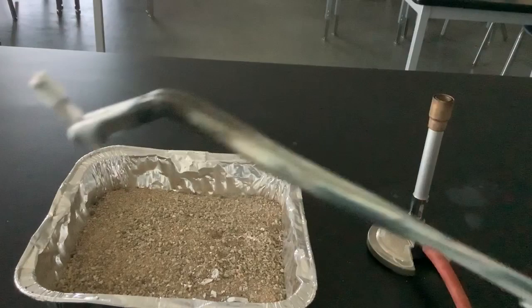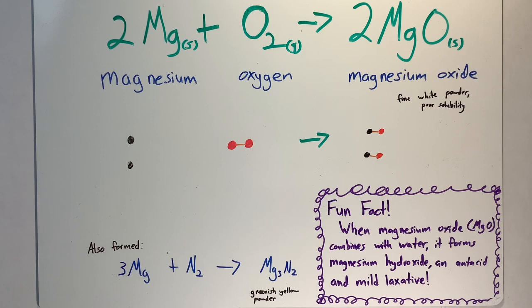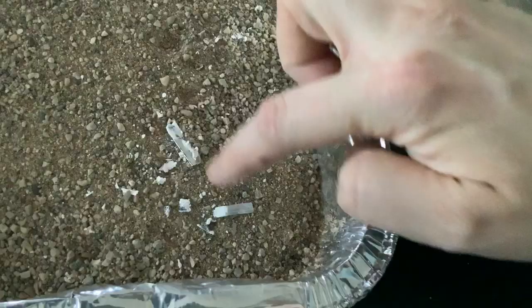So here you can see the piece of it. And most of what we saw was magnesium oxide, the white substance that's formed, and some leftover magnesium metal, which is where the tongs were holding it.